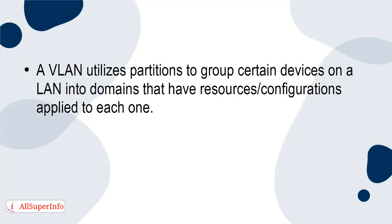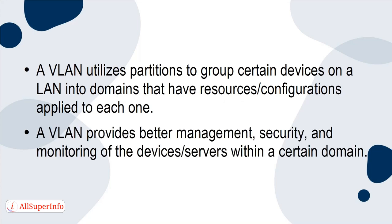This creates a tunnel of addresses which encrypts the browsing history and makes it impossible to remotely access information. A VPN offers a small-scale virtual network via the internet for people to connect. VLAN – Virtual Local Area Network. A VLAN utilizes partitions to group certain devices on a LAN into domains that have resources and configurations applied to each one. A VLAN provides better management, security, and monitoring of the devices and servers within a certain domain.